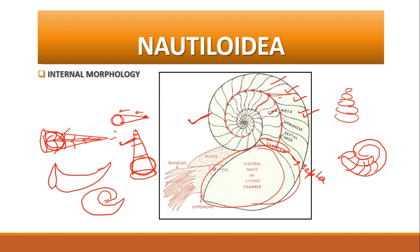As the animal grows in size, the chamber sizes also increase, which is why the body chamber is the largest. To maintain the balance of the shell, all chambers except the body chamber are filled with air. These are known as air chambers.